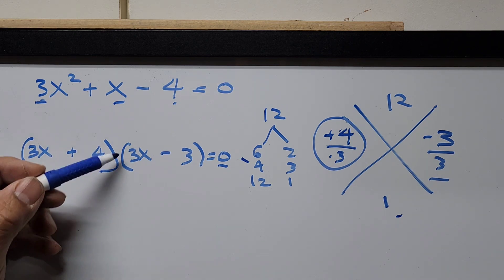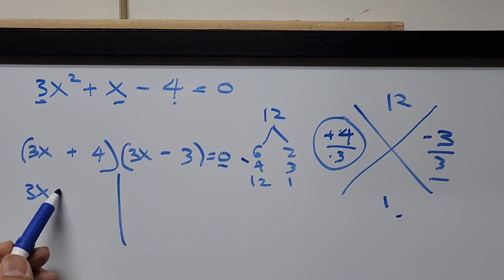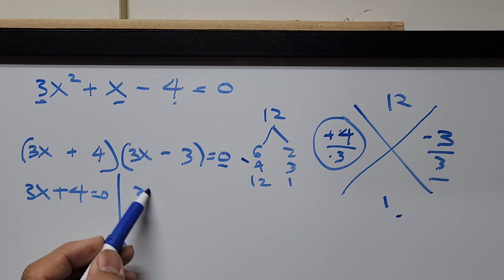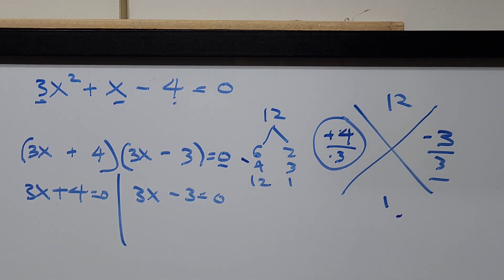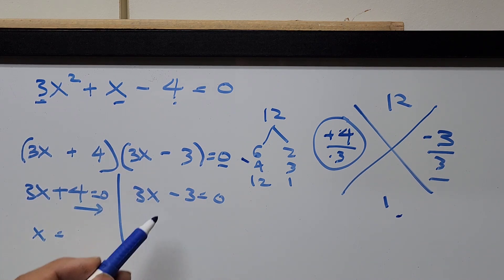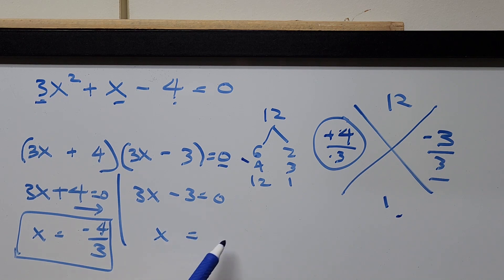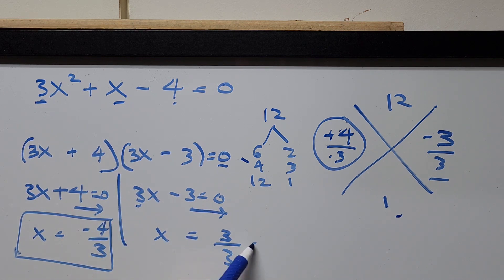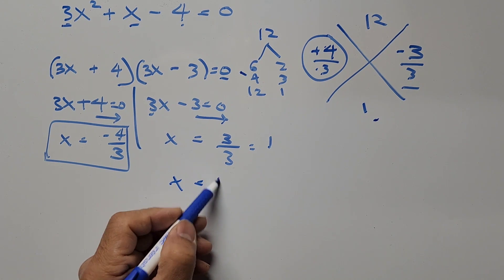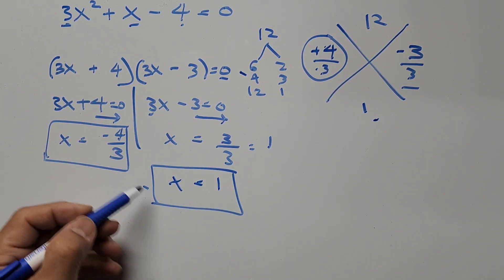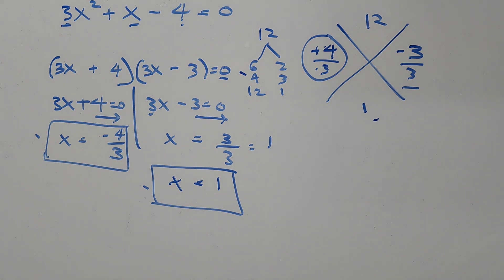For the left factor: 3x plus 4 equals 0 gives x equals negative 4 thirds. For the right factor: 3x minus 3 equals 0 gives 3 divided by 3, so x equals 1. These are the two values of x from Method 1: x equals 1 and x equals negative 4 thirds.